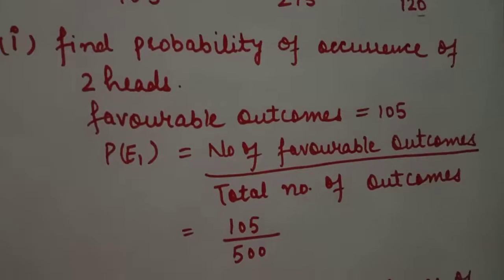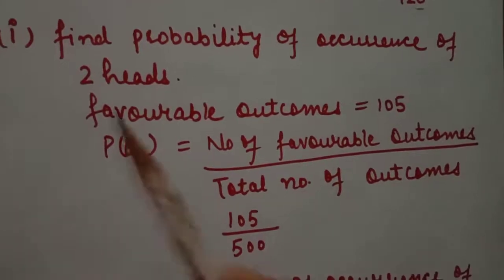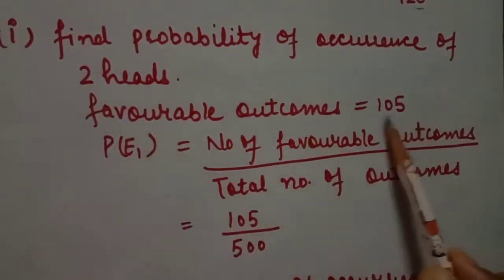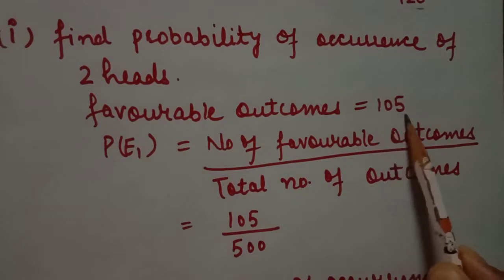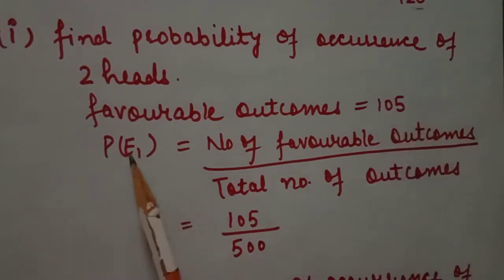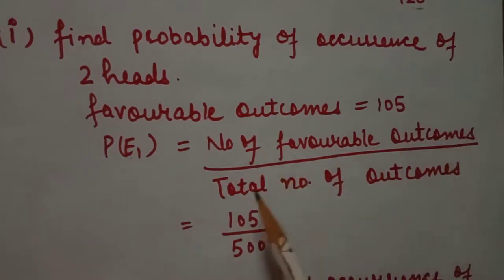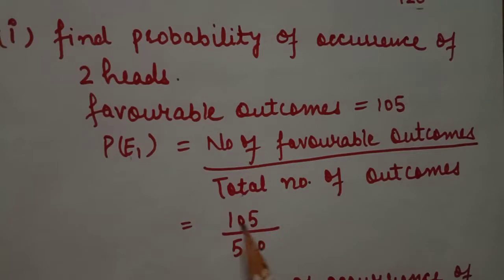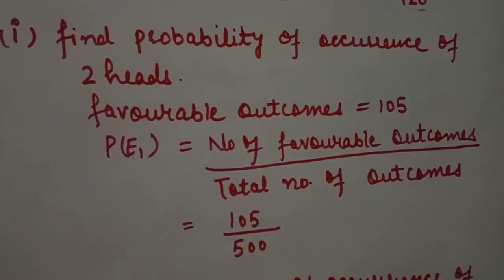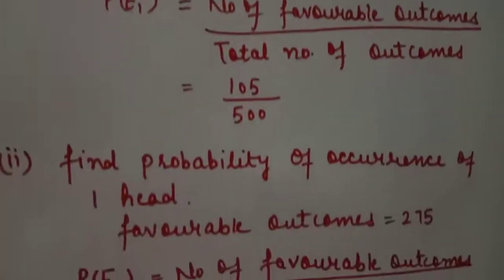First part: find the probability of occurrence of two heads. The favorable outcomes are 105, since two heads came up 105 times. So P(E1) = favorable outcomes / total outcomes = 105/500.